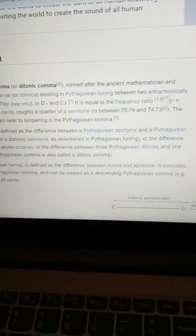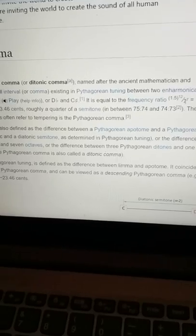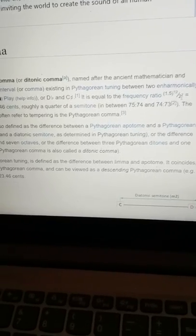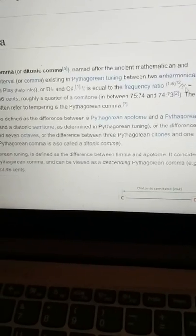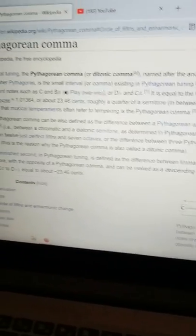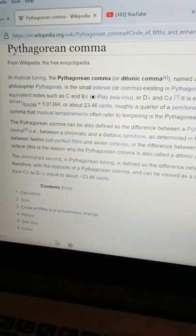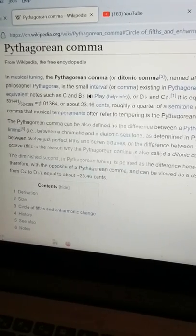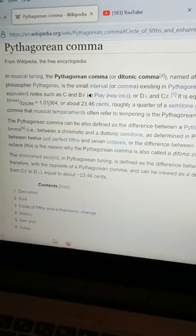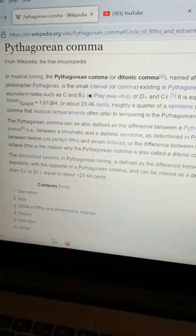Now, if you go up here, they show the ratio as 3 halves to the 12th divided by 2 to the 7th. Now, if you do that number, you get a different value than 1.01364.